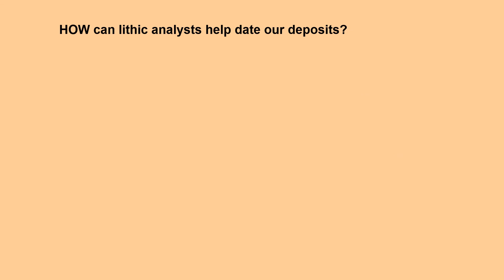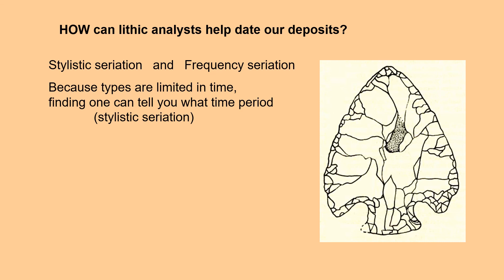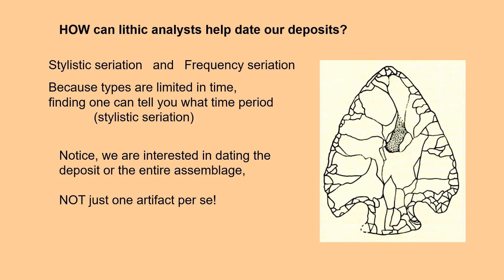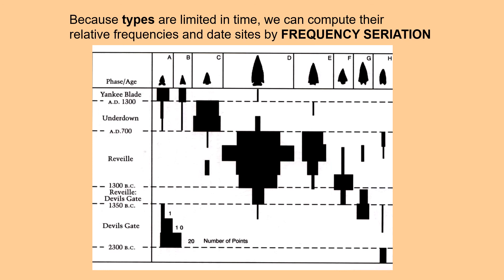How can they help date our deposits? Through stylistic seriation and frequency seriation. Because types are limited in time, finding one can tell you what time period — through stylistic seriation. We're not just interested in dating one artifact per se; we would like to date the deposit or the entire assemblage. We can compute relative frequencies and date sites by frequency seriation, looking at all the different types and the percentages of each type within the assemblage for that time period.